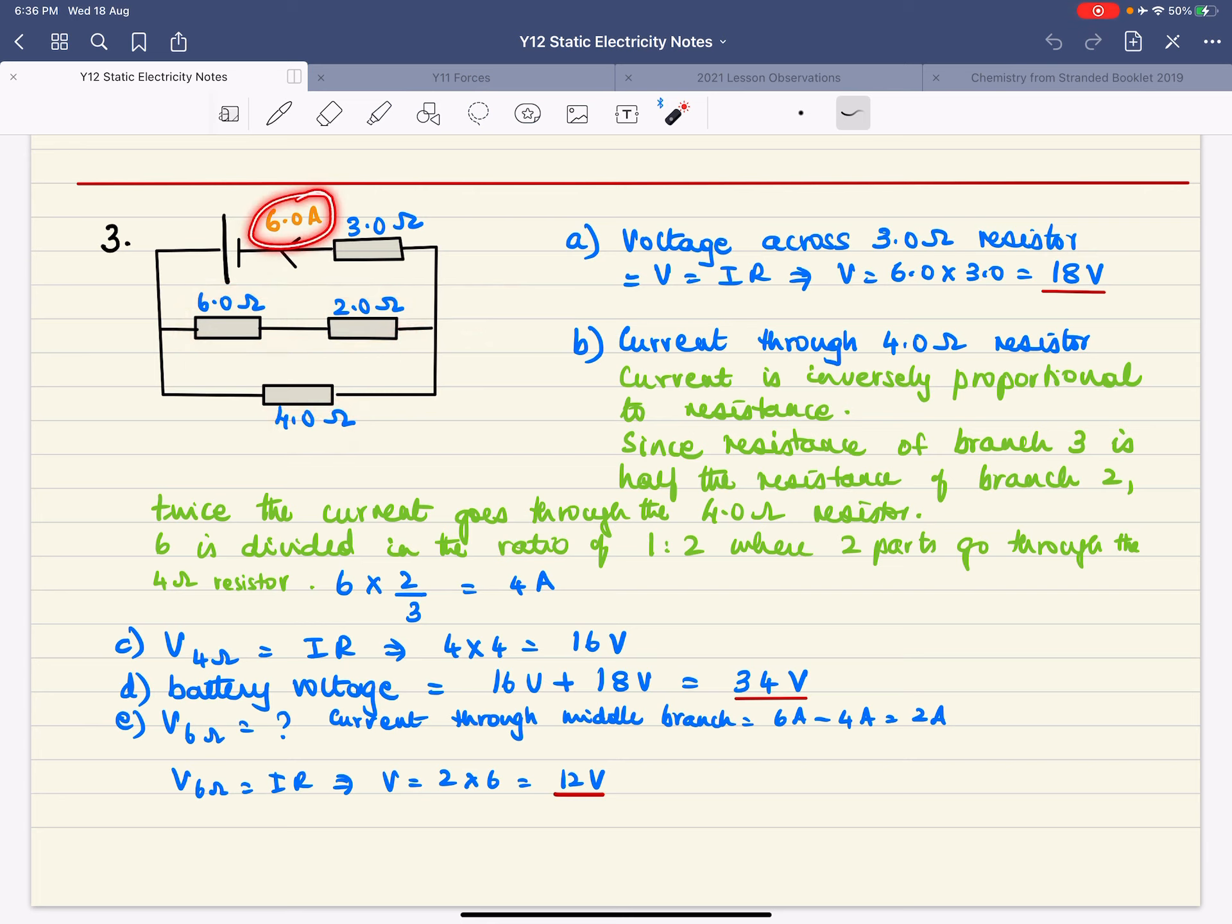So this total current of 6 amps goes two parts to the bottom branch and one part to the middle branch. So you're dividing six in the ratio of 1 to 2. So because two parts go to the bottom branch we get two parts out of a total of three parts and six is divided in that ratio so that's how I get the current through the bottom branch is 4 amps.